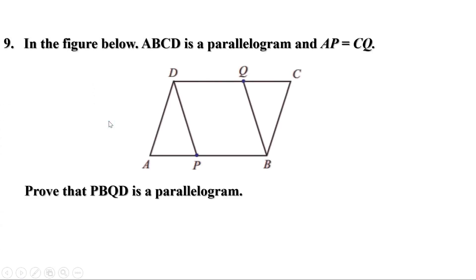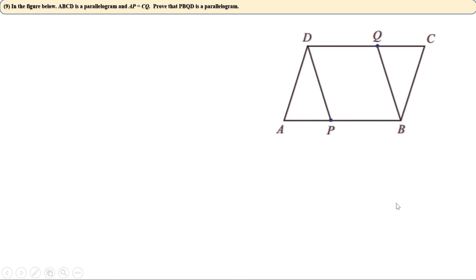Ninth problem: in the figure, ABCD is a parallelogram and AP equals CQ. Prove that PBQD is a parallelogram. To prove a quadrilateral is a parallelogram, it is enough to prove that both pairs of opposite sides are equal. PB and DQ are one pair of opposite sides.